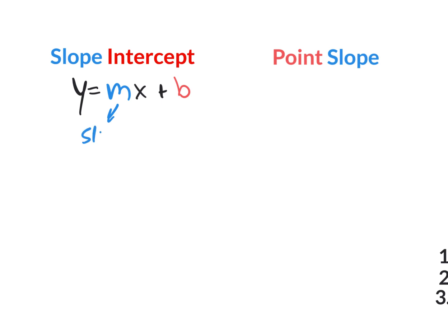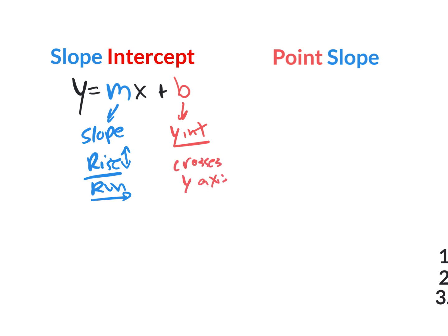We need to know that m is the slope, which is rise over run. The rise could be positive or negative, but the run is always going to be positive — we look at it from left to right. The b value is the y-intercept; it tells you where your line crosses the y-axis. So if a line passes through the y-axis at 5 and has slope 2, the equation is y equals 2x plus 5.